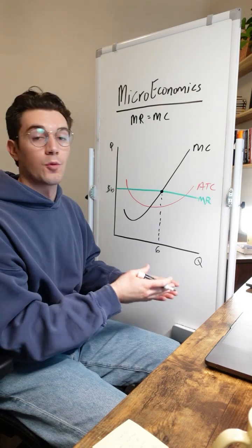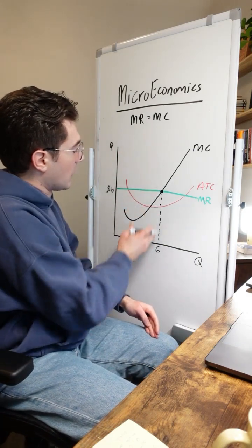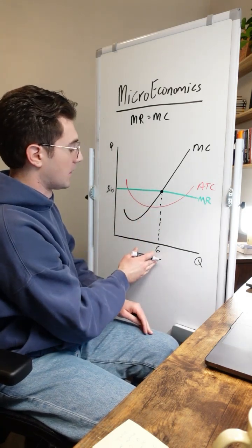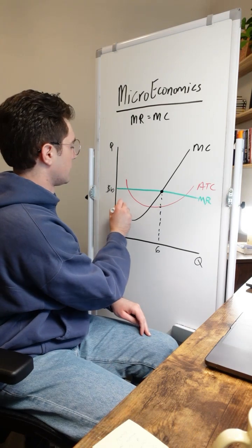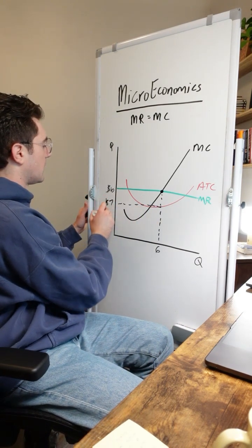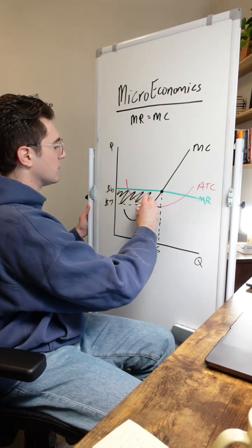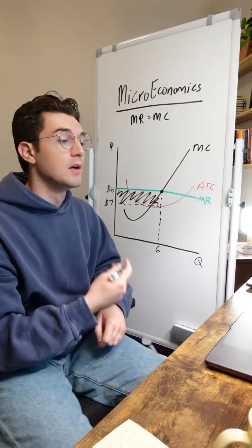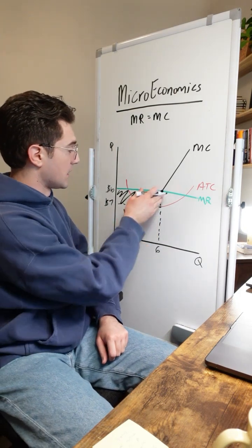Real quick to calculate the profit here or loss, just see vertically where we hit the ATC curve from six units. That happens right here. So that means that the average total cost, we'll say in this case, is seven bucks. So this rectangle right here would be the profit rectangle that this firm is generating from operating at this point right here.